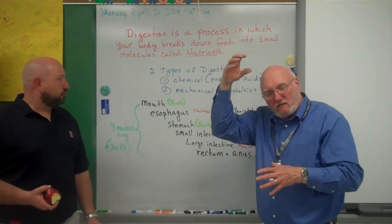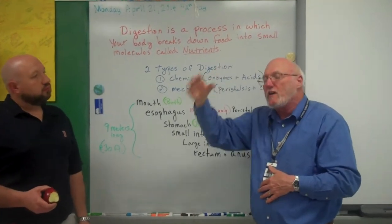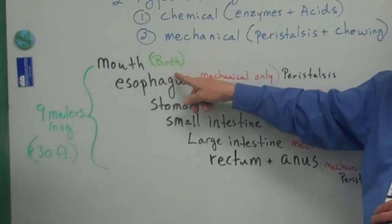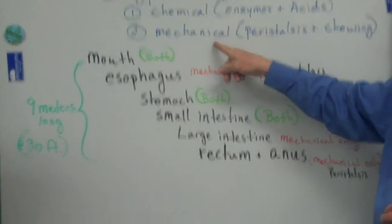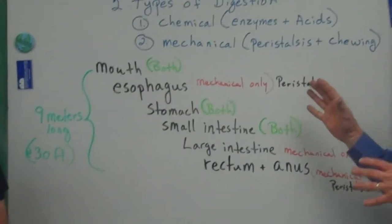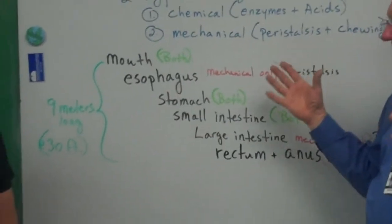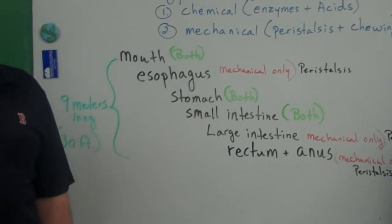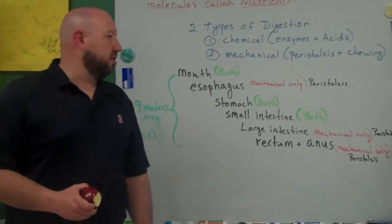And just before you swallow it, it's this wet ball called bolus. And if it's soft enough, then it can go down your esophagus. Now in your mouth, you have both kinds of digestion, chemical and mechanical. And your esophagus, because it's moving the food, there's not much digestion that occurs, but we will arguably say it's mechanical only because it's moving the food down towards the stomach.